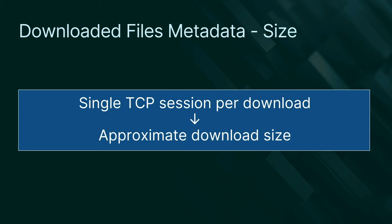The second element in HTTPS metadata is the approximate size of data being transferred. When a file is downloaded over HTTPS it's normally in one TCP session, and even though encryption may add random padding, the amount of data transferred stays relatively the same. Also, the size of an executable file is usually much bigger than other page resources, making it identifiable within an HTTPS session.